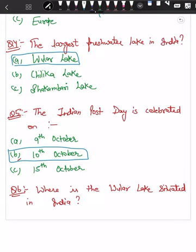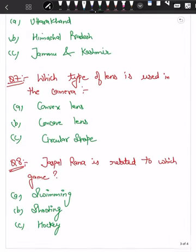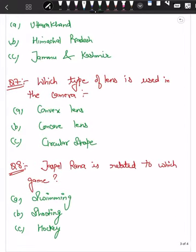Question number 6: where is Wular Lake situated in India? We have discussed a question about the freshwater lake in India, and now — where is Wular Lake located? Your options are Uttarakhand, Himachal Pradesh, or Jammu & Kashmir.